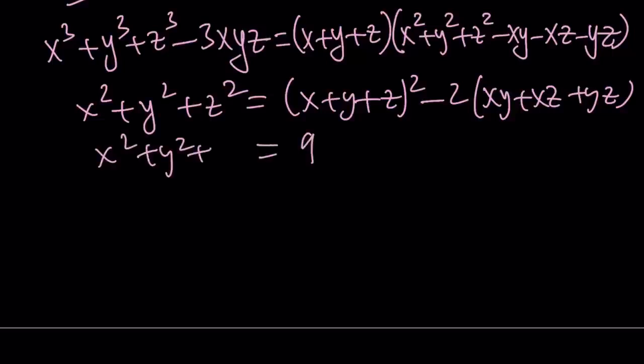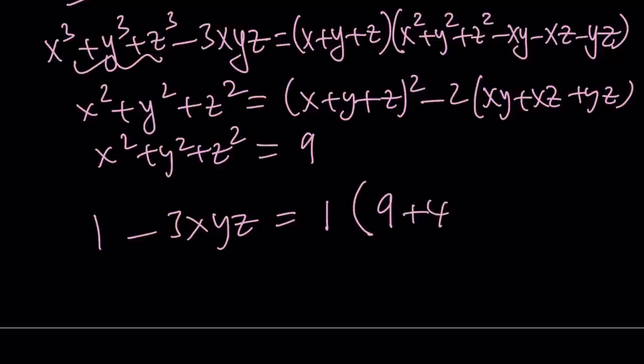So now I have these two values. And how am I going to use this? Well I'm just going to plug in everything. So I know that this is equal to 1 minus 3xyz. And then x plus y plus z is 1, x squared plus y squared plus z squared is equal to 9, and from that I'm going to subtract negative 4, which is positive 4 in this case. That is going to be 13.